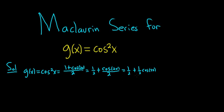So why did we do this? Because now we can find the Maclaurin series for cosine 2x. Once we have that, we can multiply it by 1 half, and then just add 1 half to it and we're done. So let's start by writing down the Maclaurin series for cosine x.